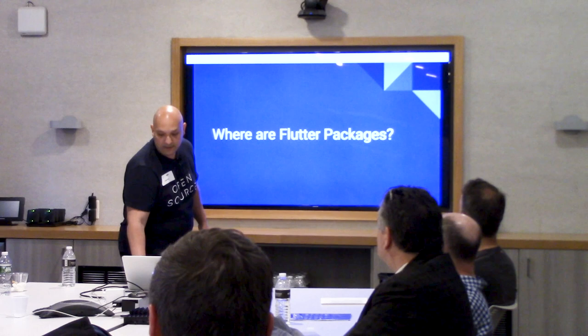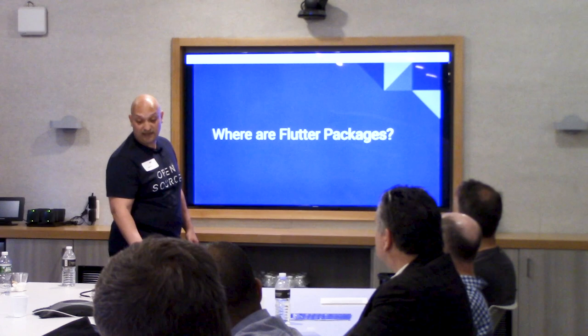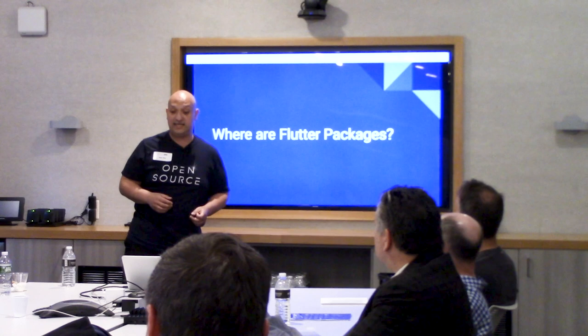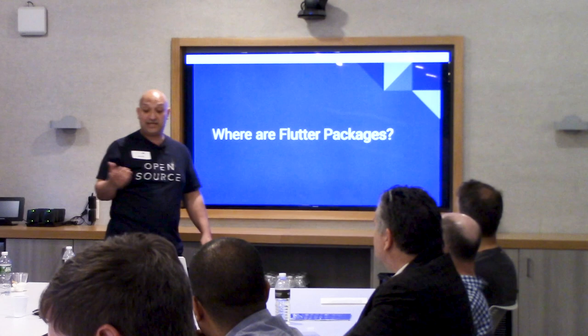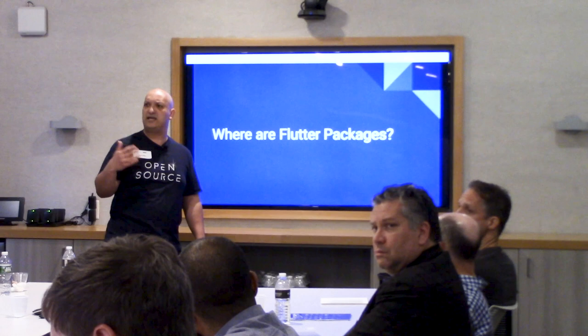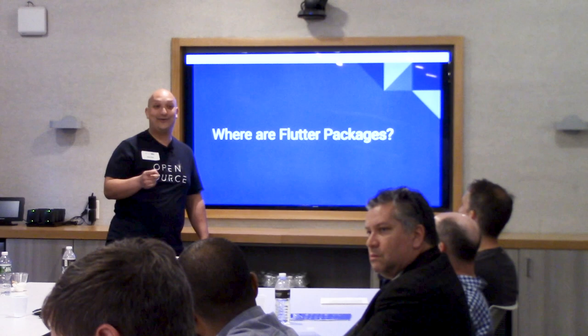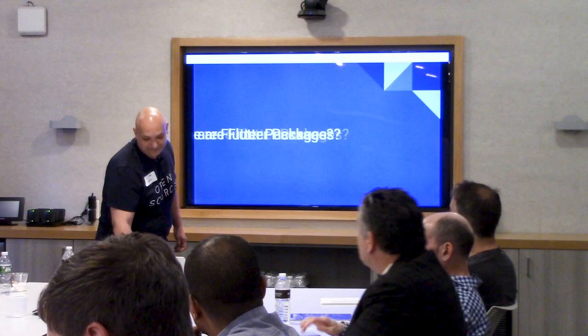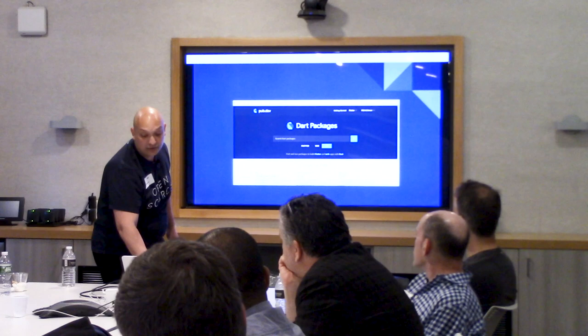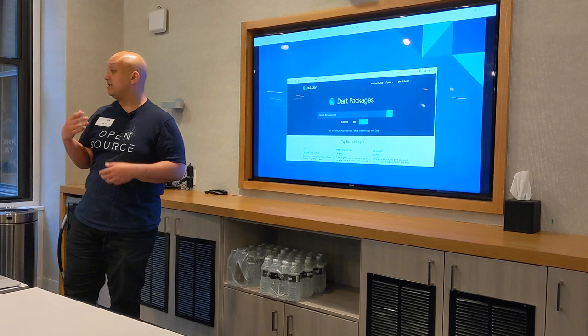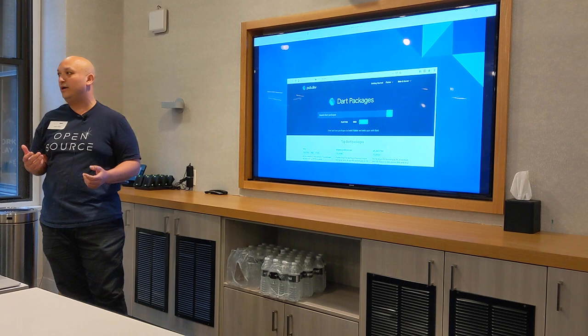So where can you find these Flutter packages? They can be found on the pub.dev website and downloaded into your project via a declared dependency in your pubspec.yaml file. You can even find them on GitHub and add the repositories directly into your dependencies. The advantage of that is — let's say you want to create a dependency but don't necessarily want to put it on the pub website just yet. You can keep it on GitHub, experiment with it, and when you're ready for the rest of the world to see it, you can then put it on pub.